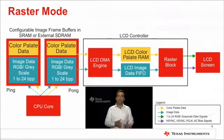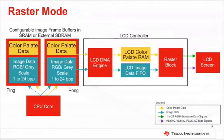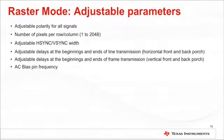Both DMA-only and ping-pong modes are allowed so that images can be dynamically updated. The output of the raster block is tailored to controller-less LCD screens and consists of standard RGB data lines and control signals. The raster mode control supports several options for adjusting signal timings including polarity, number of pixels per row and column, hsync and vsync width, delays at the beginning and end of line and frame transmission, and AC bias frequency. Because of all these features, the LCD controller on TM4C129X devices can be used to drive most active and passive display types.